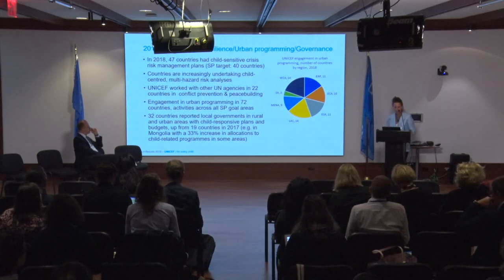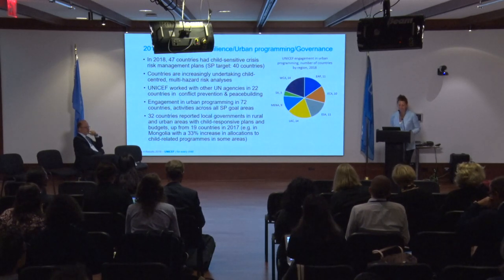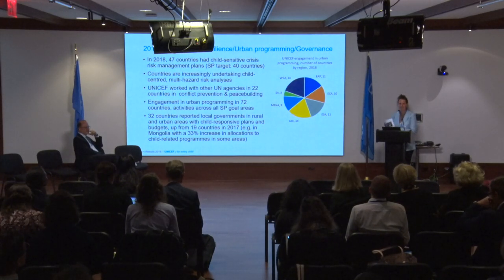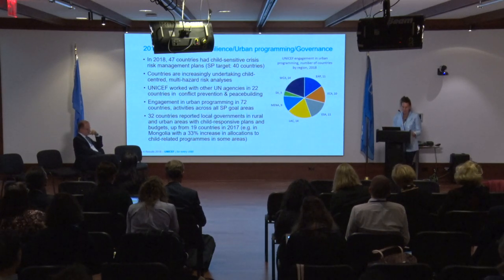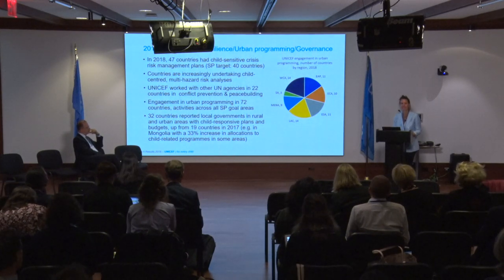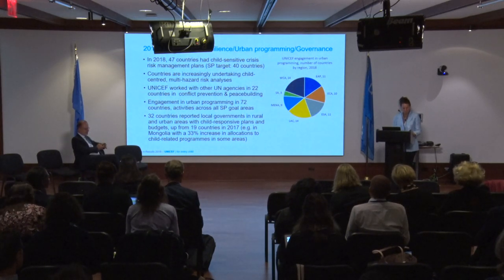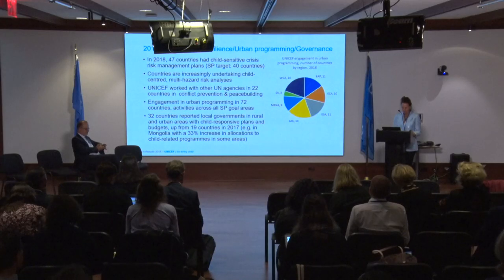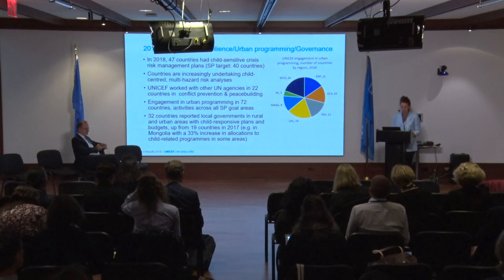Now moving to the other areas of Goal 4 — some of the exciting new things in the strategic plan. This is the first year we're reporting results in these areas. Our main strategies have been looking at positioning and strengthening children's issues in disaster risk reduction, peace-building, local governance, and urban planning. We've found that one-third of our country offices meet our organizational benchmarks for risk-informed programming.